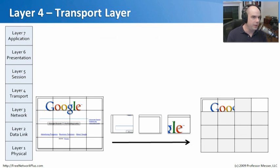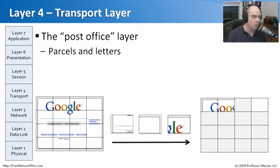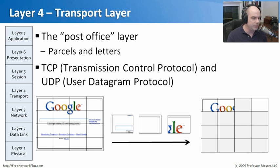Layer 3 is like the truck that takes information from one side of the network to the other. But there's always cargo in the back. Layer 4, the transport layer, provides the methodology that fills the parcels — the actual data. This is where protocols like TCP (Transmission Control Protocol) and UDP (User Datagram Protocol) operate, sitting right on top of IP to carry data across the network.